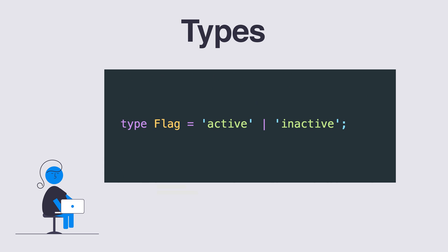In TypeScript there are also advanced types, and one of them being the type aliases. Aliases allow you to create a new name for a custom type. To create a new alias in TypeScript you use the type keyword.